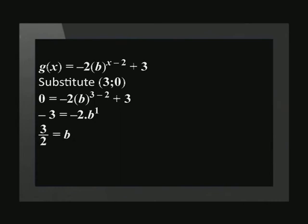Once simplified, b equals 3 over 2. This means that g of x equals negative 2 times 3 over 2 to the power of x minus 2 plus 3.